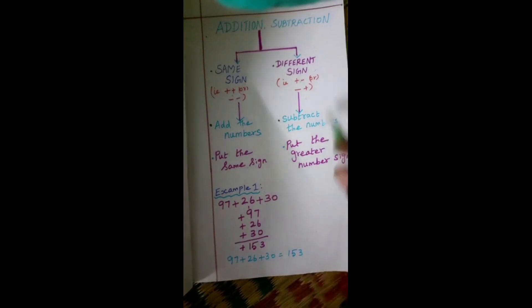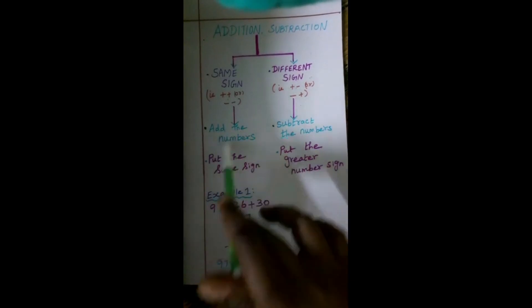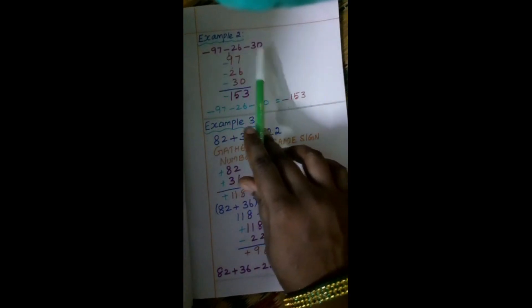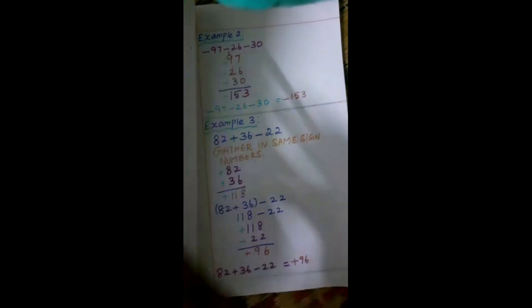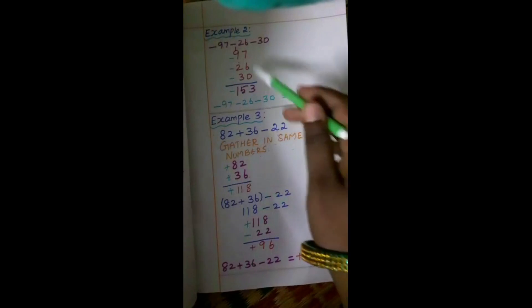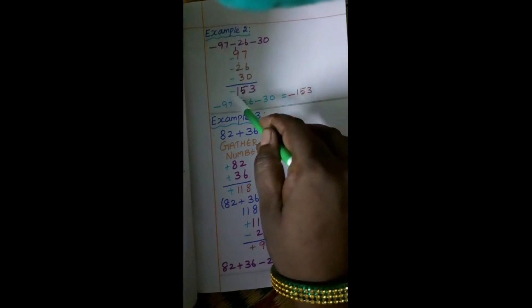Whatever sum is given in addition and subtraction, first we check if the sign is the same, then we add the numbers and keep that same sign. See Example 2: minus 97, minus 26, minus 30. These 3 numbers contain the same sign, which is minus. So we proceed the same two steps — add the numbers: 7 plus 6 is 13, carry 1; 9 plus 1 is 10, plus 2 is 12, plus 3 is 15. The same sign is minus, so I put a minus sign.